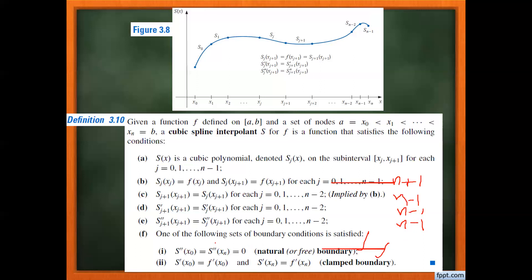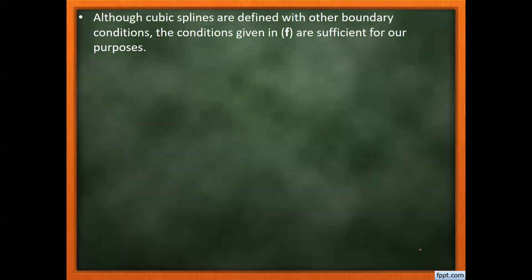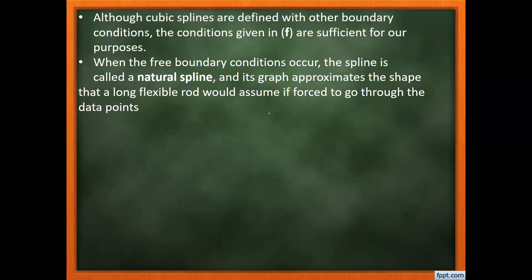If we don't have any further information about our data we use the natural condition, but if we are provided with the derivative values at the initial and last endpoints then we can use the clamped boundary condition. When natural conditions are used it's called a natural spline; when clamped conditions are used it's called a clamped spline.